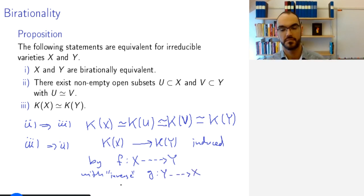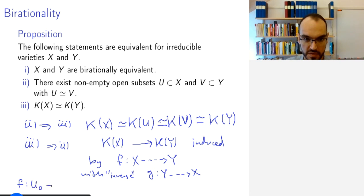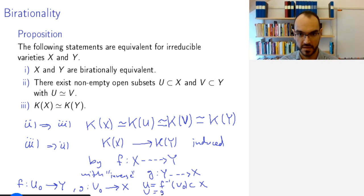to X and so in other words f is a map from some say U_0 to Y and g is a map from some V_0 to X and then if you take as U the inverse image of V_0 inside X and as V the inverse image of U_0 inside Y then these two f and g will give you an isomorphism between U and V and these will be dense open subsets of your varieties.